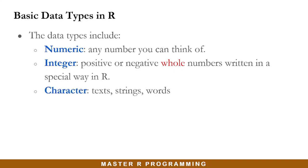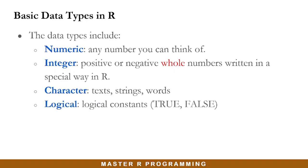Character data types are mainly text, strings, words. So if you want to write sentences or words, you have to write it in the form of a character data type. Logical data type includes the logical constants we learned earlier, and that includes true or false.